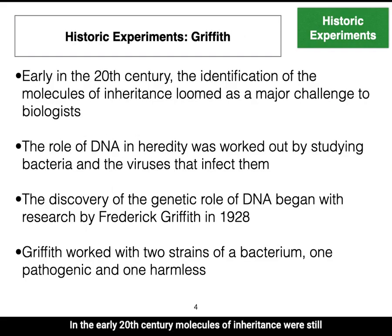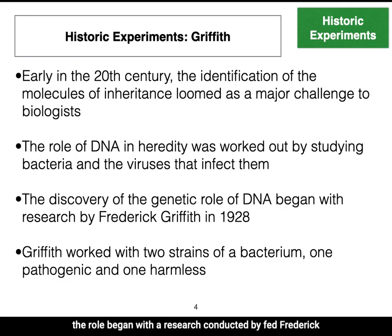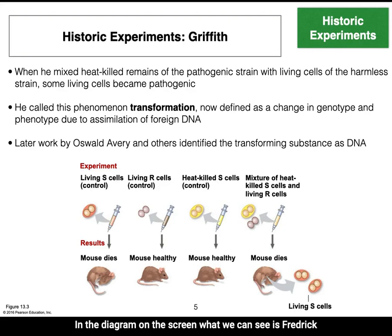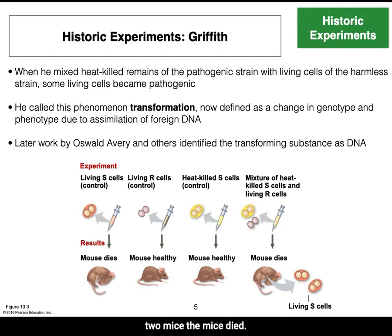In the early 20th century, molecules of inheritance were still unknown. The role of DNA in heredity was identified by experiments conducted with bacteria and viruses. This research began with Frederick Griffith in 1928. His work used two strains of bacteria: one pathogenic and one harmless. In his experiment, the S cells are the pathogenic cells and the R cells are the harmless cells. When S cells are given to mice, the mice die; when R cells are given to mice, the mice remain alive.